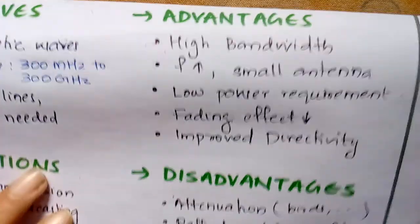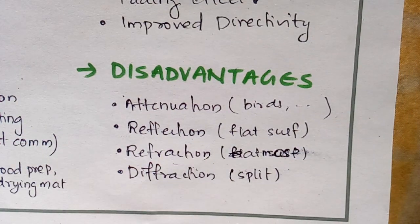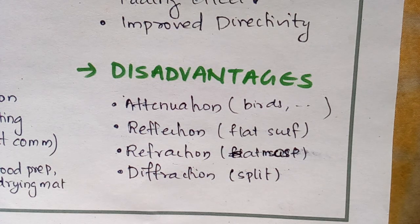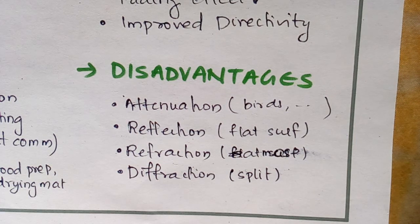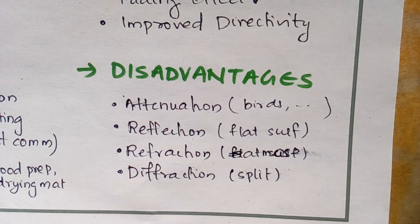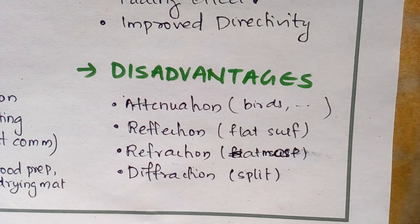Coming to the disadvantages — attenuation, reflection, refraction, and diffraction. These are common disadvantages. Attenuation occurs when signals get disrupted by obstacles. Reflection occurs from a flat surface. Refraction occurs in the atmosphere due to atmospheric properties. Diffraction means the splitting up of the signal.